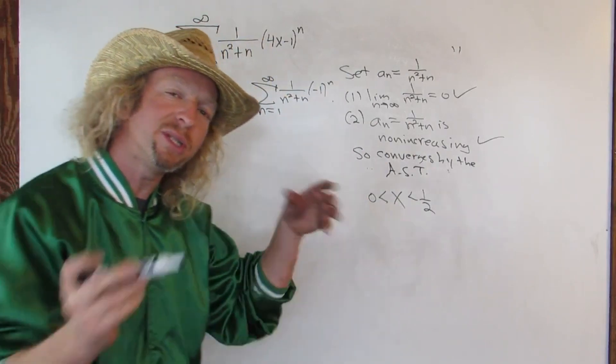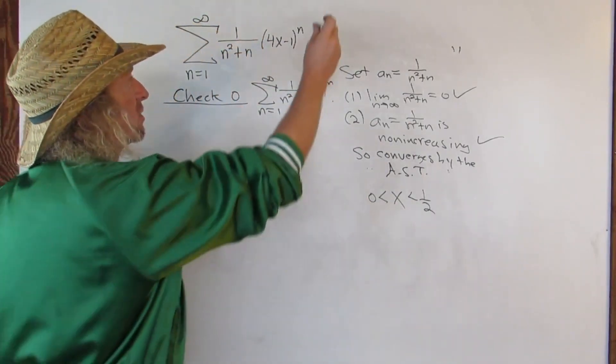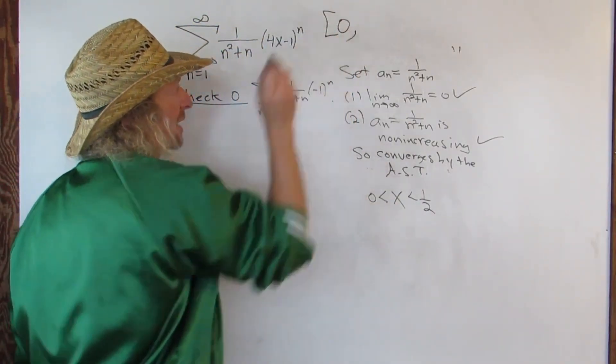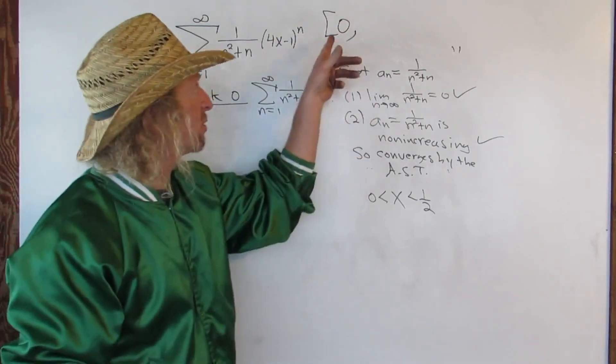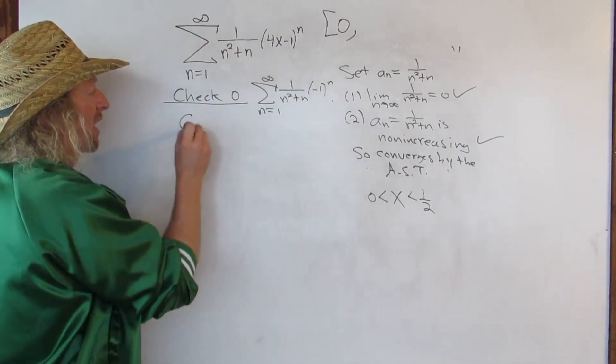So it converges by the alternating series test. So what does that mean? That means we include 0 in our interval of convergence. So, so far, we have a bracket at 0. If this would have diverged, we would have had a parentheses. All right. Now we have to check 1 half. It's going a little bit fast.